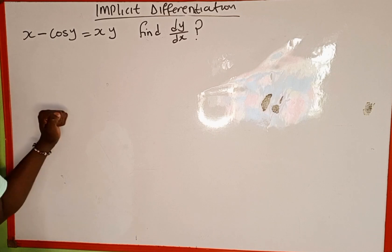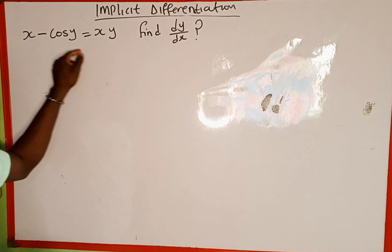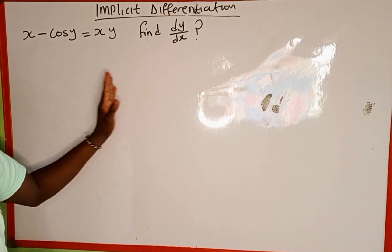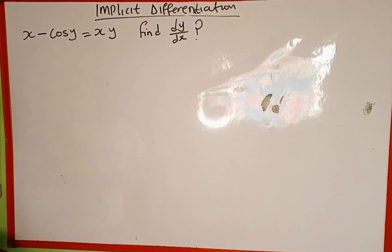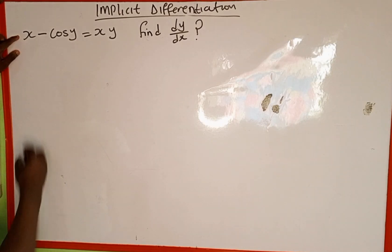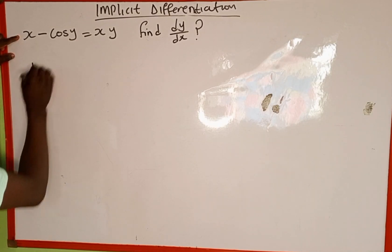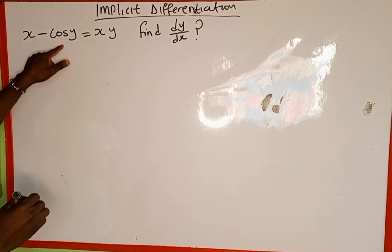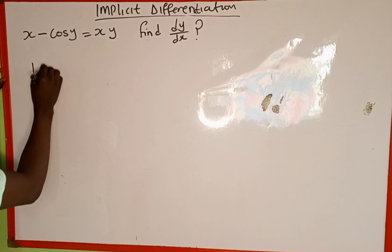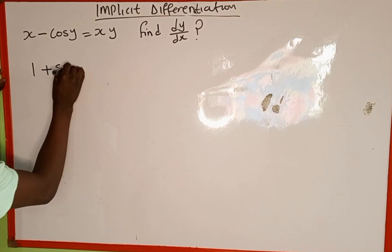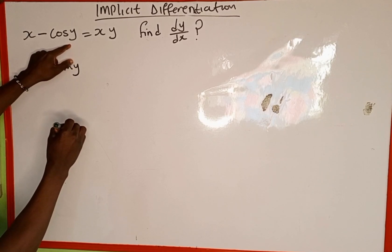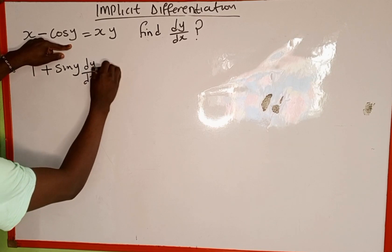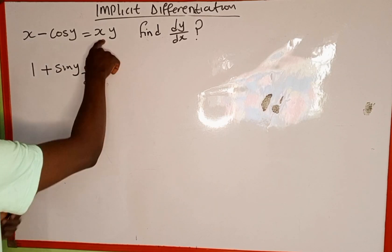What we are going to do is differentiate x with respect to x, then we also differentiate y. Any time a term involves y, we multiply it by dy over dx. So the derivative of x with respect to x is 1, then minus the derivative of cos y, which is negative sine y — and that minus multiplied by the negative gives positive sine y. Since this term contains y, we multiply by dy over dx.